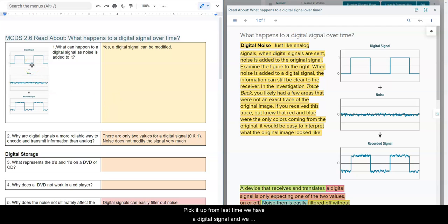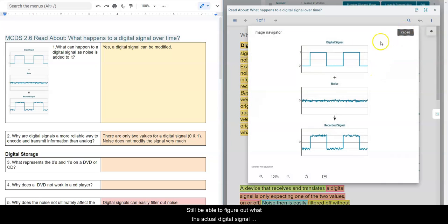Picking up from last time, we have a digital signal and we have a little bit of noise. You can see that over here. And when we add noise to the digital signal, although it does modify the sound, it's really easy to filter. It's really easy to still be able to figure out what the actual digital signal is.